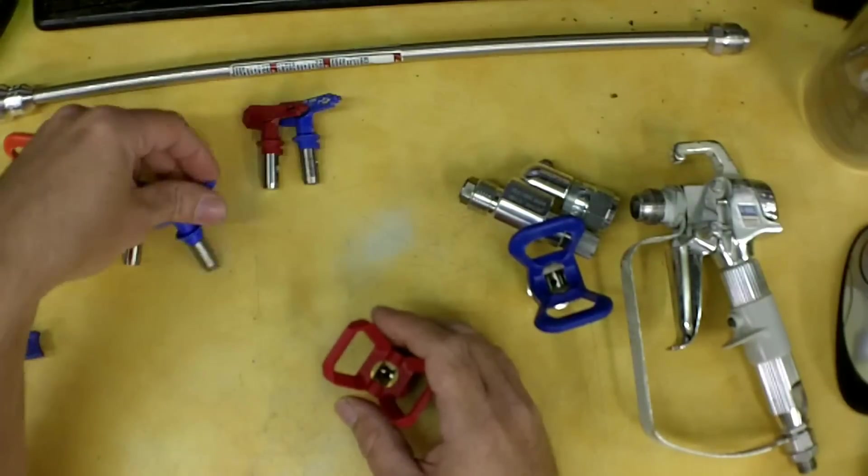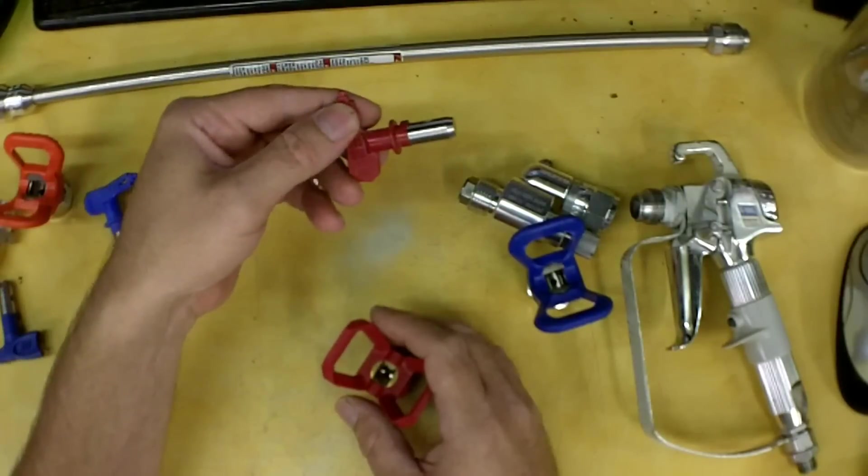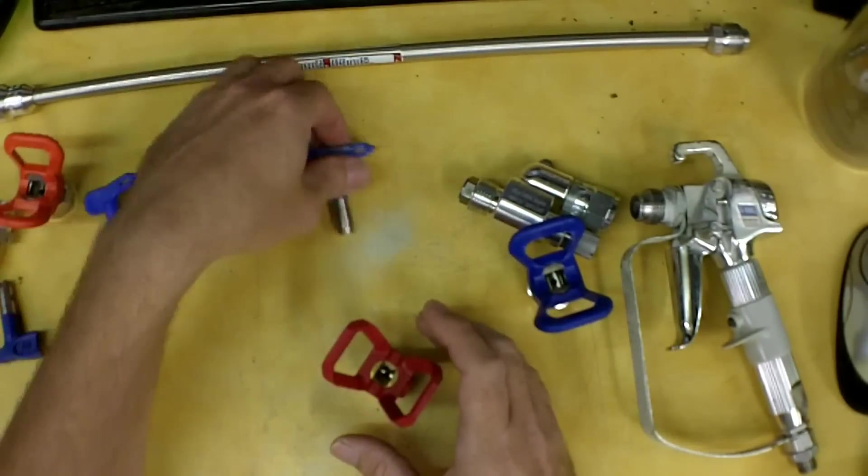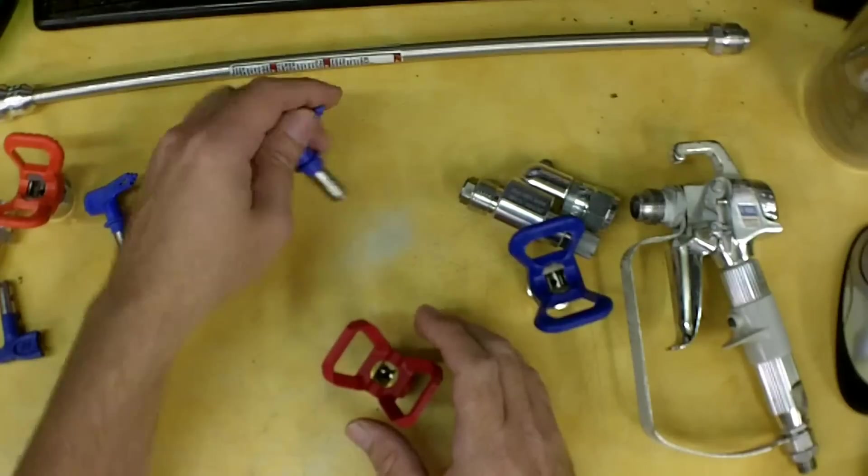Here's a 315, it shoots a 6-inch fan. A 515, it shoots a 10-inch fan with a little bit smaller orifice. And then a 517, it shoots a 10-inch fan as well.